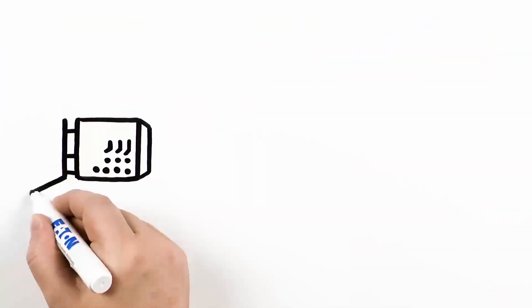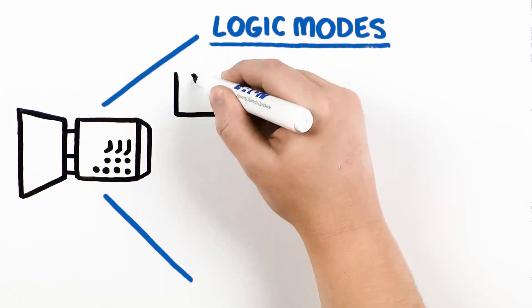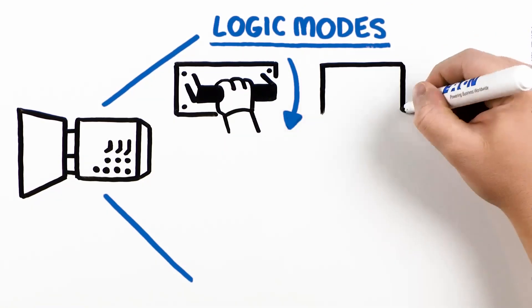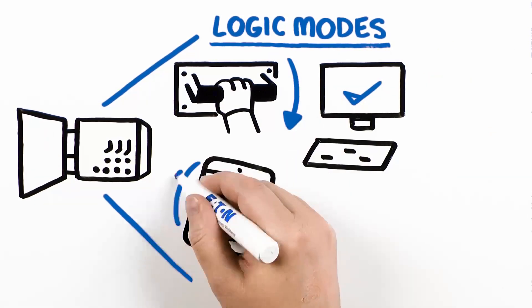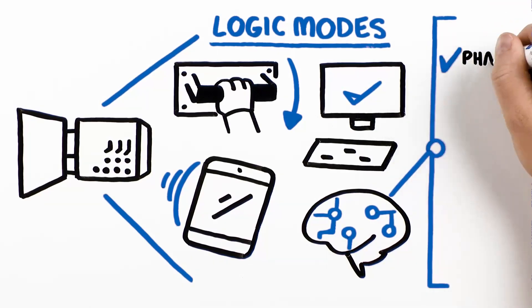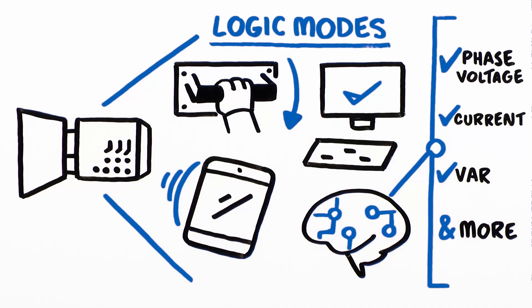Eaton's capacitor controllers offer multiple logic modes. These can include local control, often used for inspection and maintenance purposes, time-based programmable schedule switches, remote control, and smart logic utilizing various sensor readings of phase voltage and current, VAR and more to make switch decisions.